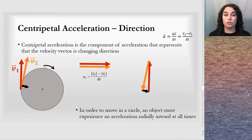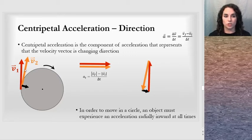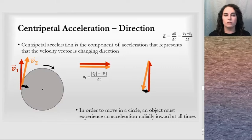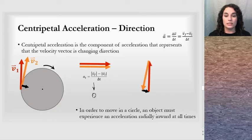Looking at circular motion, we can see two velocity vectors — an initial one and a final one — very close together on the circle, like milliseconds apart. I put them next to each other, and you can see they're the same length, meaning the tangential velocity is zero — it's not speeding up or slowing down. Even though it's not speeding up or slowing down, the velocity vector has changed direction.